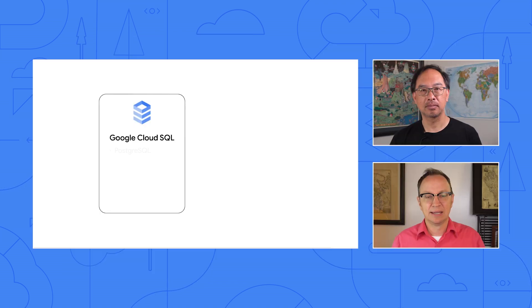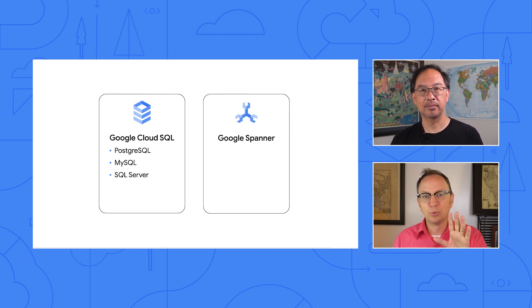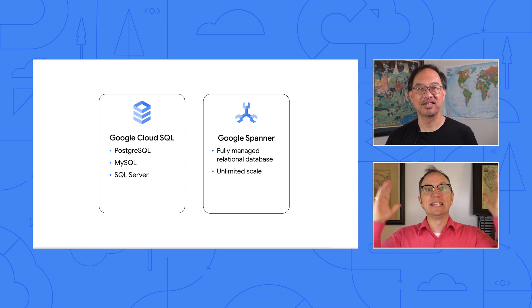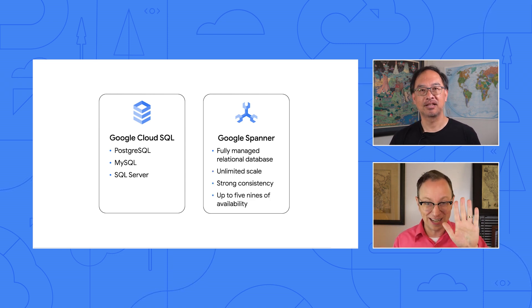As a developer, you first have to ask yourself if you want a relational or SQL database, or a non-relational NoSQL database. Relational SQL databases are good for aggregating data over many records — to find averages, counts, maximums, and so on. They're also good when money needs to be stored in a database, or when you have complex data models. Cloud SQL supports MySQL, Postgres, and SQL Server. But if you want a fully managed relational database with unlimited scale, strong consistency, and up to five nines of availability, you should check out Spanner.